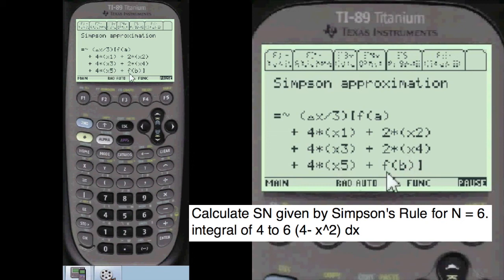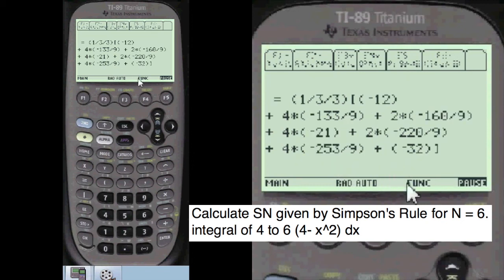4 times x of 5, and then f of b. Turns out to be these calculations. Write this all on your paper.